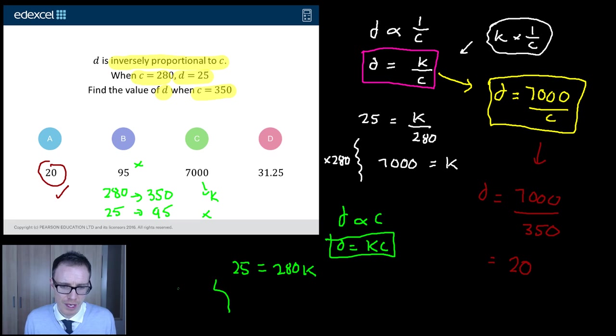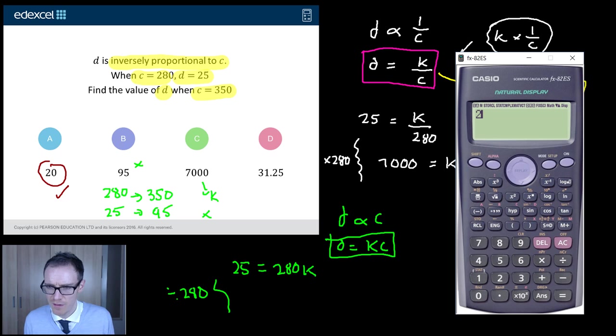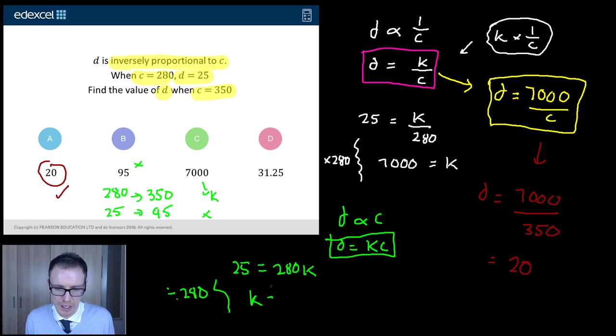This time I'm going to have to divide by 280. I'll need my calc for this one. So this time, if I do 25 divided by 280, I'm going to get 0.0556. So K is 0.0556. My pen's running out of electronic ink again here.